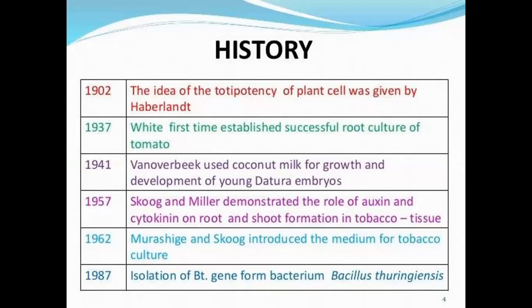In 1957, Skoog and Miller demonstrated the role of auxin and cytokinin, which are growth hormones, on root and shoot formation in protoplast tissue. In 1962, Murashige introduced the medium for tissue culture which is MS media. And in 1987, isolation of Bt gene from bacterium Bacillus thuringiensis was achieved.